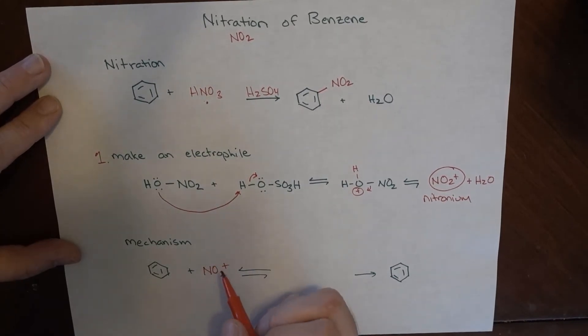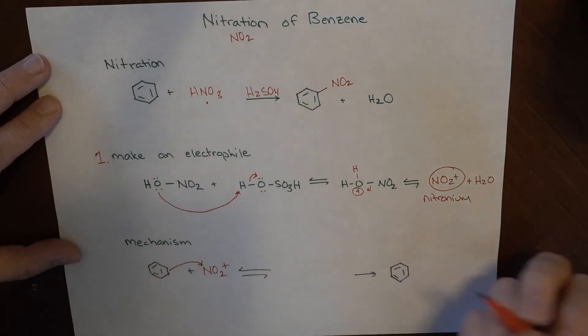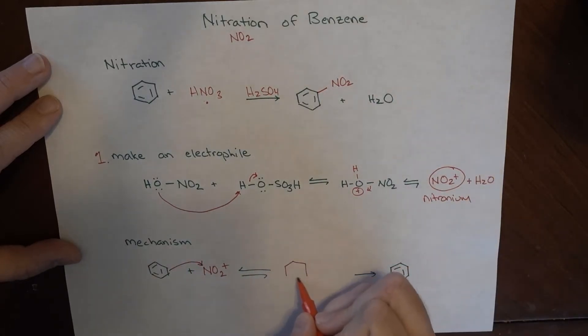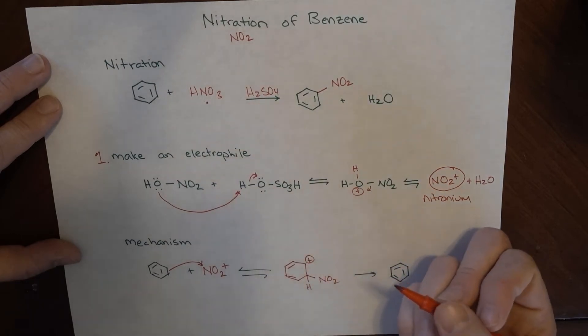This mechanism is very similar to all the ones we've seen already. What ends up happening here is the electrons from this grab onto this. Let me keep all my things straight here—the NO2 will end up going here, we've got an H attached here, and a positive charge here.